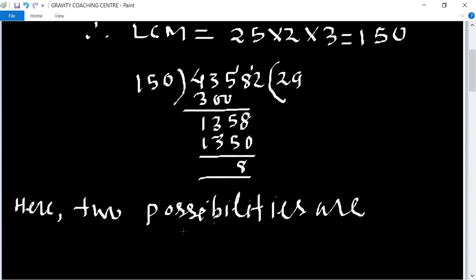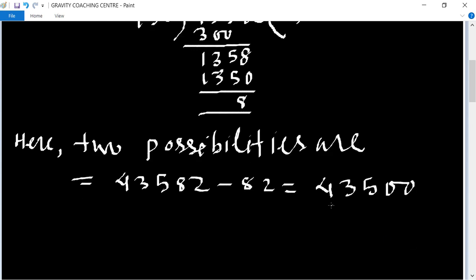First number is 43582 minus 82 equals 43500.